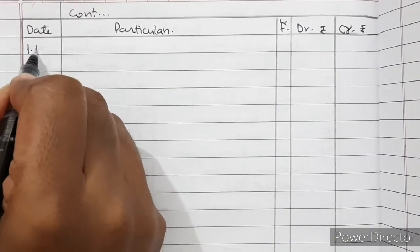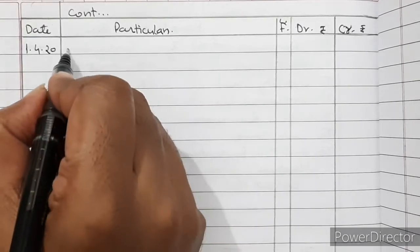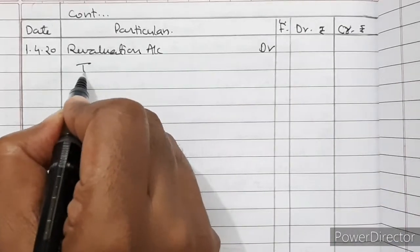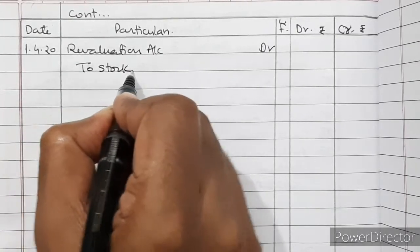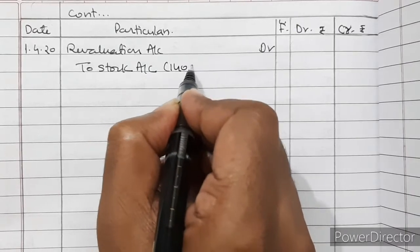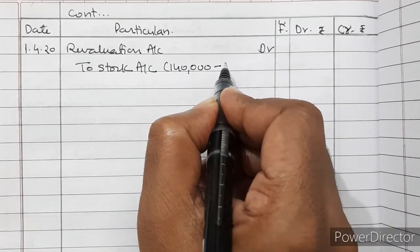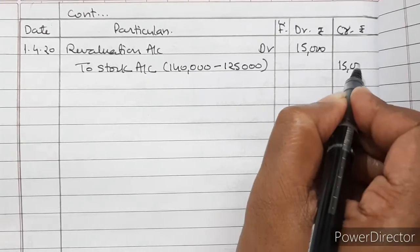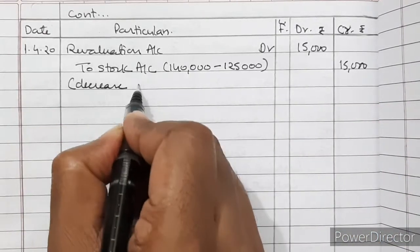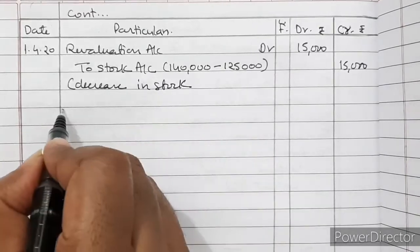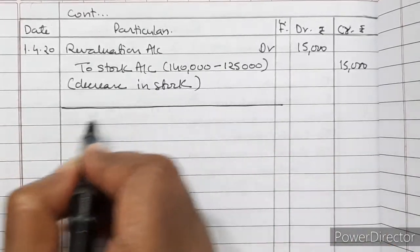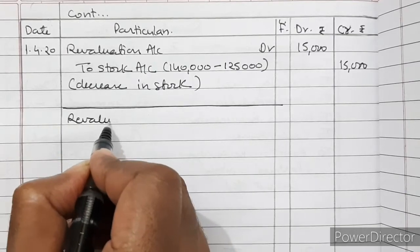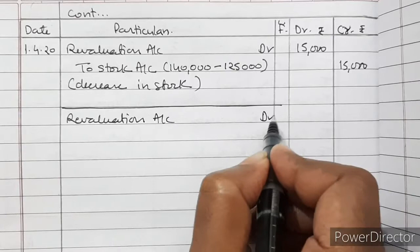Now we come to the revaluation adjustments. Value of stock is reduced, so Revaluation Account debited to Stock Account — from Rs. 1,40,000 reduced to Rs. 1,25,000, that is a decrease of Rs. 15,000. Value of machinery is also decreasing by 10%, so Revaluation Account debited to Machinery Account. Machinery is Rs. 2,50,000, and 10% of that is Rs. 25,000.